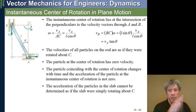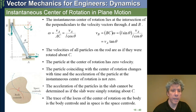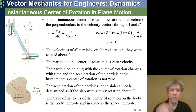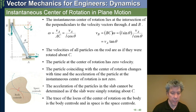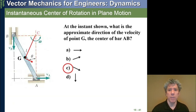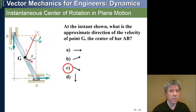The acceleration of particles in this slab cannot be determined as if the slab were simply rotating about C - the acceleration is more complicated; we'll get into that in the next lecture. You can trace the locus of the instant center relative to the body - that's called the body centroid - or relative to space, called the space centroid, but we won't use that. At the instant shown, the velocity of any point is perpendicular to a line between the center of rotation and that point.